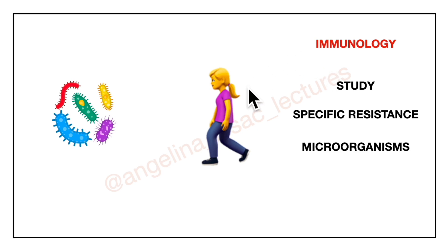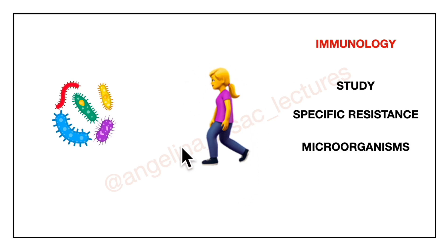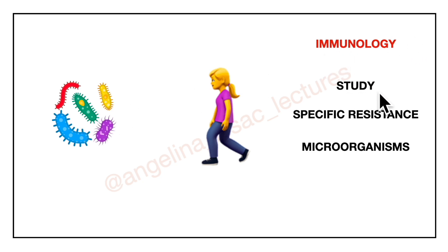I am taking an example. Here you can see a person and here are certain microorganisms. If these microorganisms enter this person's body, there can be two types of reactions. One is the person can either be infected and exhibit certain signs and symptoms. Second, this person's immune system can show resistance to these microorganisms. Basically, immunology is the study of specific resistance to further infection by a particular microorganism or its products.